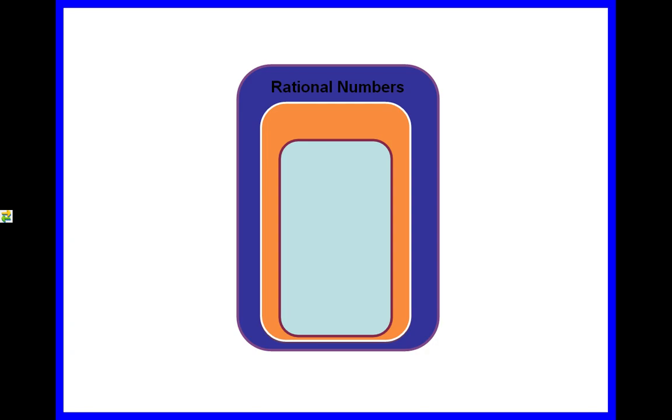If we're talking about rational numbers, there are other sets of numbers that are considered rational numbers. Integers are also rational numbers. And there's another kind of number we're going to talk about today, and that is a whole number. A whole number is considered an integer and a rational number.